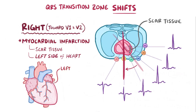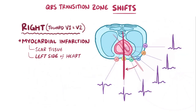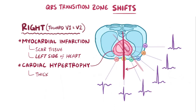For example, a blockage in the left circumflex artery can cause infarction of the posterior wall of the left ventricle, and that would lead to a rightward rotation of the QRS transition zone toward V1 and V2. Another example of a rightward shift is cardiac hypertrophy, because a thicker muscular wall contributes more to the overall QRS vector. So in this case, in order for it to be a shift to the right, it would have to be a right ventricular hypertrophy.